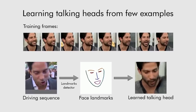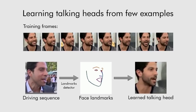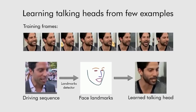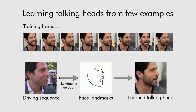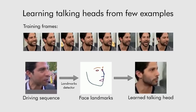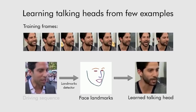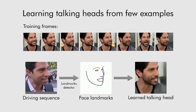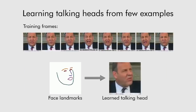We present a system that can learn realistic talking head models. Notably, learning a new head model requires just a handful of images. In this example, the model was learned from eight frames. Once learned, it can be driven by face landmark positions extracted by running an off-the-shelf face landmark tracker on a different video of the same person. The learned model effectively serves as a realistic avatar, working well even for new view angles not present in the training examples.